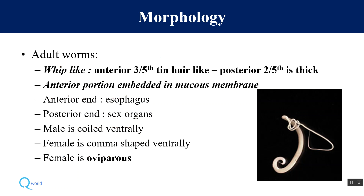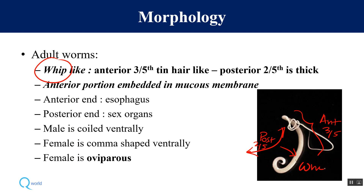Regarding morphological forms, the adult worm looks like a whip — the posterior two-fifths portion is very thick and the anterior three-fifths portion is very thin, giving it a whip-like impression. The anterior portion remains embedded in the mucosa of the cecum and appendix, so what you can see during colonoscopy is only the posterior portion. At the anterior end there is the esophagus, and at the posterior end there are the sex organs.